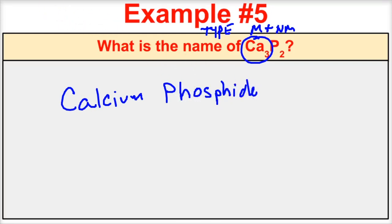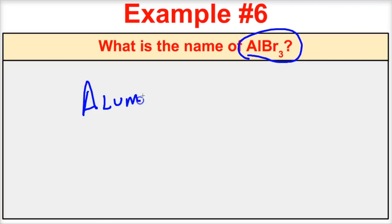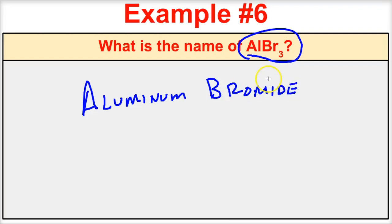Let's take a look at one more example: AlBr₃. The correct name for this is aluminum bromide. Aluminum is a type 1 metal — it only forms positive 3 ions. It's bonded to a nonmetal, so we name the metal aluminum, change the ending to -ide, and we get aluminum bromide.